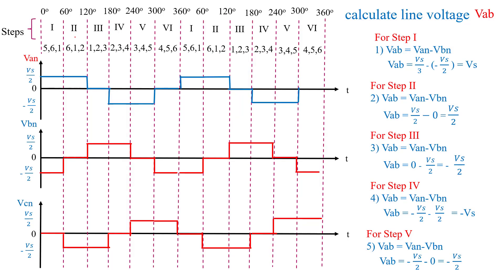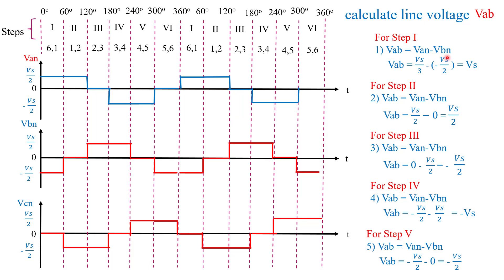Step by step, we analyze the phase voltages and calculate the line voltage. First, we calculate VAB. To calculate line voltage, we use the phase voltage waveform. For step 1, from 0 to 60 degrees: VAB equals VAN minus VBN. From the waveform, VAN equals Vs/2 and VBN equals minus Vs/2. Substituting: Vs/2 minus (minus Vs/2) gives Vs/2 plus Vs/2, which equals Vs. So for step 1, VAB equals Vs.